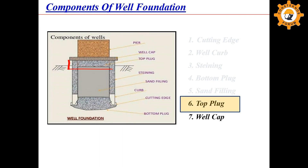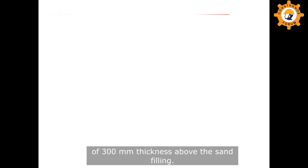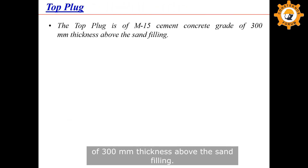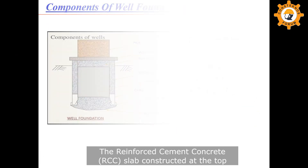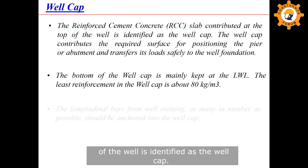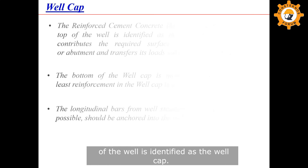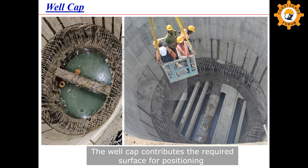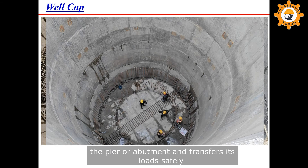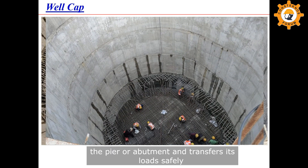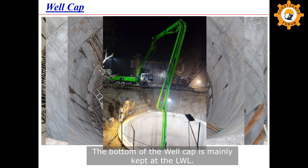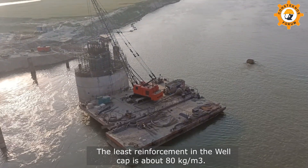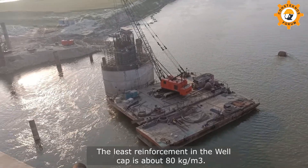The top plug is of M15 cement concrete grade, 300 mm thickness, placed above the sand filling. The reinforced cement concrete slab constructed at the top of the well is identified as the well cap. The well cap provides the required surface for positioning the pier or abutment and transfers its load safely to the well foundation. The bottom of the well cap is mainly kept at the lowest water level, and the minimum reinforcement in the well cap is about 80 kg per cubic meter.